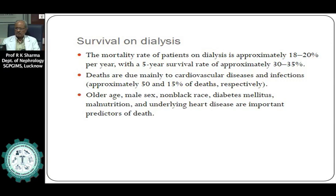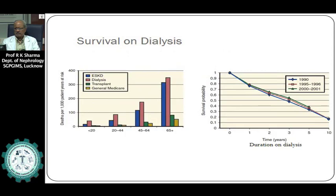Earlier, arteriovenous shunts using artificial plastic tubing in the artery and vein were used, but they are no longer in use. The preferred vascular access now is the arteriovenous fistula, where the artery and vein are anastomosed. When the arteriovenous fistula fails, a graft of PTFE or other synthetic material is placed to connect the artery and vein, and this PTFE graft is used as the vascular access for cannulation and blood drawing and return.